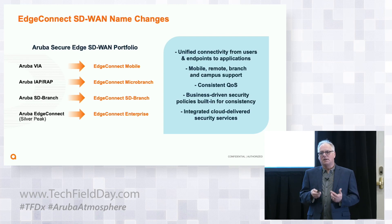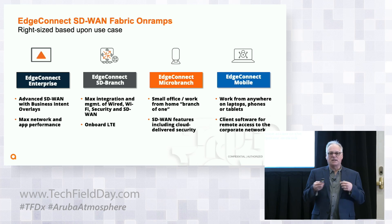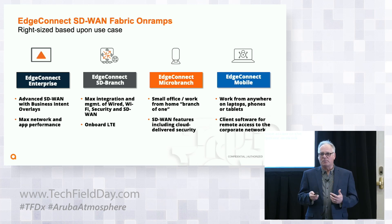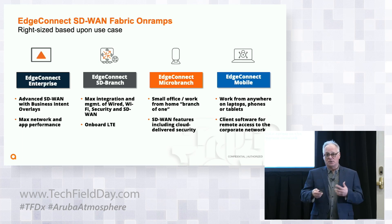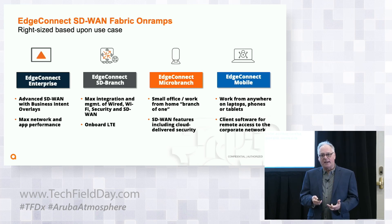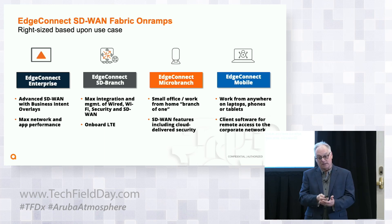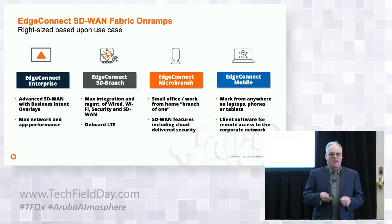Central to all of this is the centralized management that makes it easier for IT. On the on-ramps: Edge Connect Enterprise offers the most advanced SD-WAN capabilities for mid-tier to large enterprises. Edge Connect SD Branch unifies wireless LAN, wired LAN, and WAN security in a single software instance in a single box. It's made for deployments where there's very limited IT expertise or very limited space, like a retail outlet.